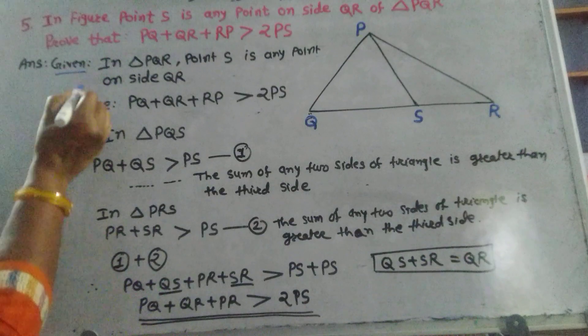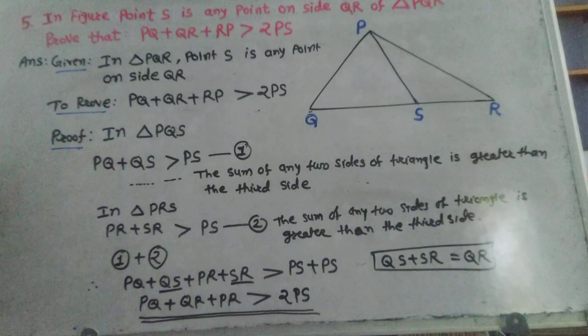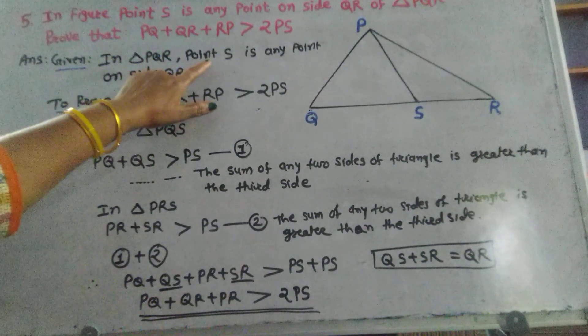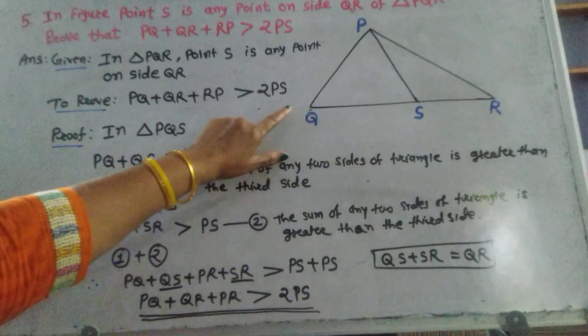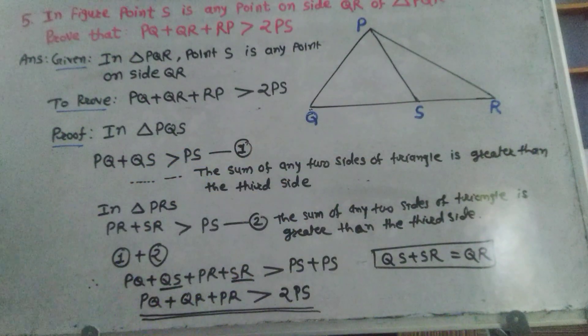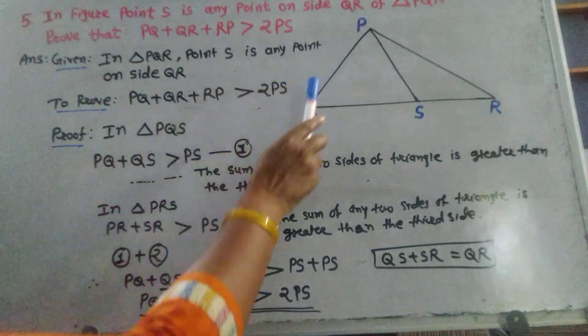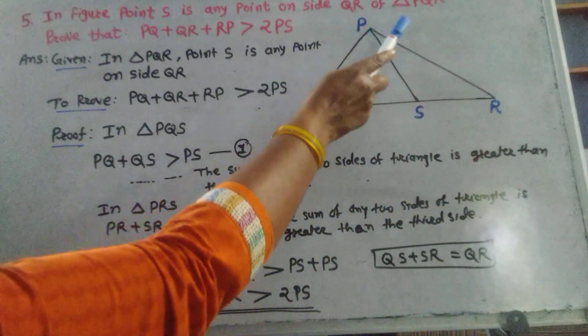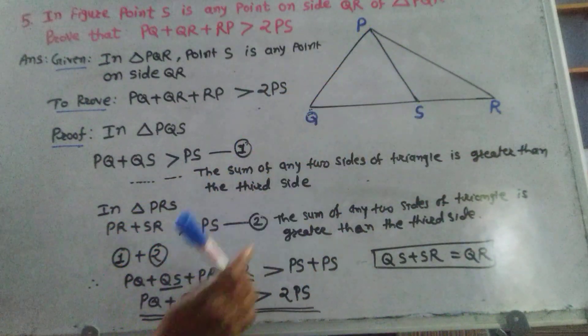Answer. Given: In triangle PQR, point S is any point on side QR. To prove: PQ plus QR plus RP greater than 2 times PS.